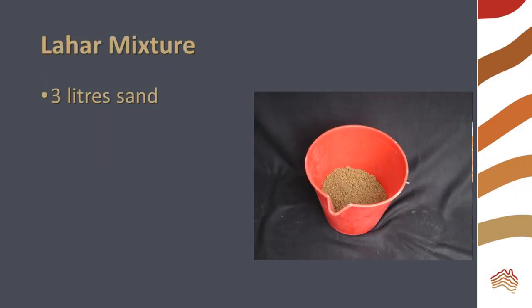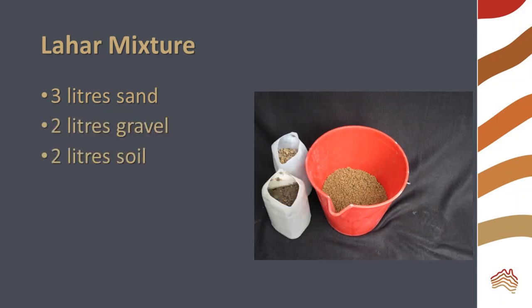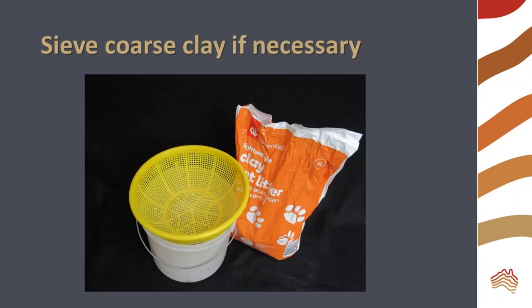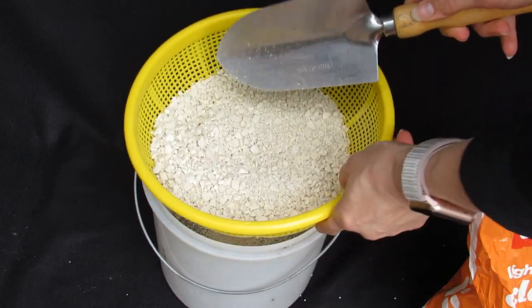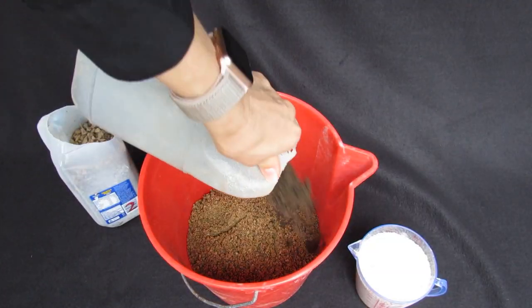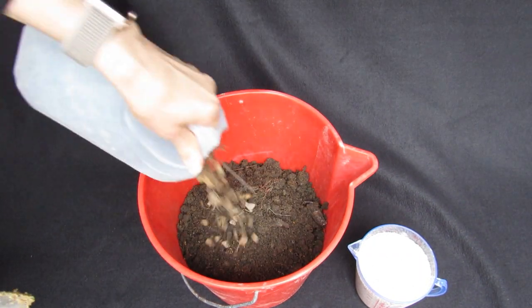You will need 3 liters of sand, 2 liters of gravel, 2 liters of soil — a clay soil is best — and 600 mils of fine clay. Potter's clay is best if you can get it, but clay cat litter is easier to find. If using clay litter, sieve it and use the fine particles for your lahar. Once you have enough, mix the ingredients in a large bucket or tub.